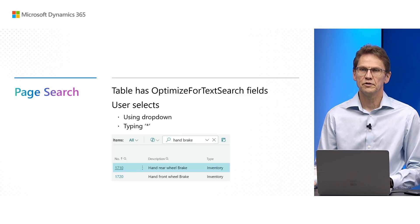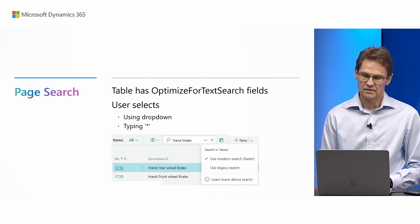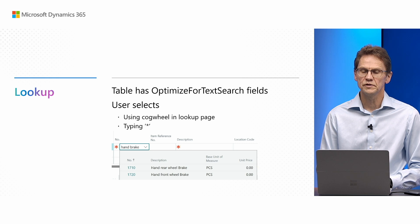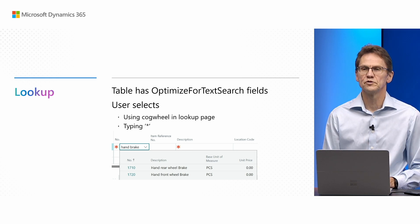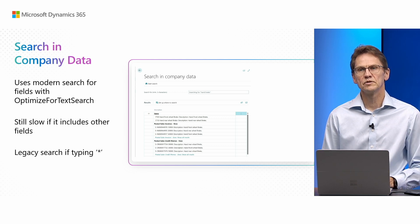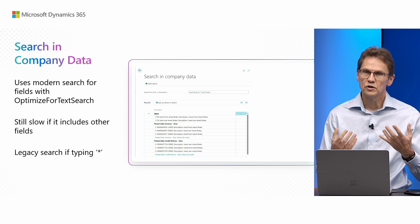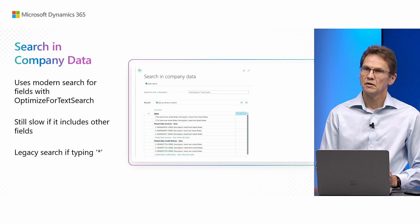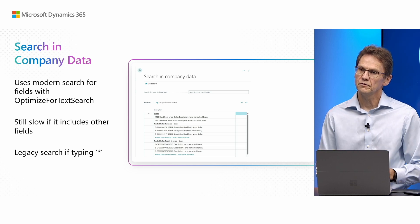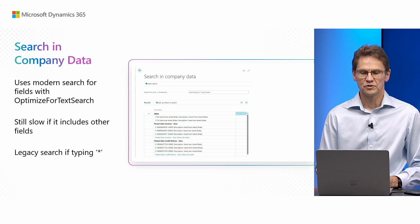Modern search is enabled in page search when the table has OptimizedForTextSearch fields, and the user can select the behavior using the drop-down or by typing star. Modern search also shows up in lookup if the table has OptimizedForTextSearch fields — the user can select using the cogwheel in the lookup page or by typing star. When searching company data, modern search is used for fields with OptimizedForTextSearch; but if you include fields not part of the text search index, you will still get the existing behavior and unfortunately also the existing performance. You can use contained search by typing the star.